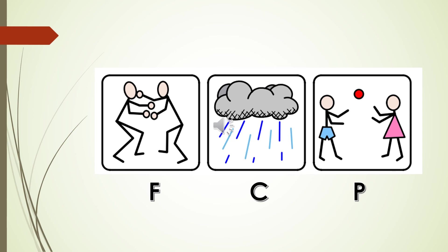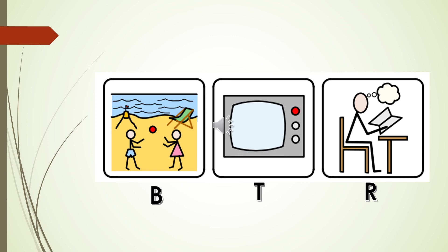These are the situations when you get different types of emotions. F for fighting, C for clouds or rain, and P for playing together. These are another three situations — B, T, R. Out of the twelve, this is the second set: playing on the beach or seashore, watching TV, and R for how you feel when reading a book to understand or think.